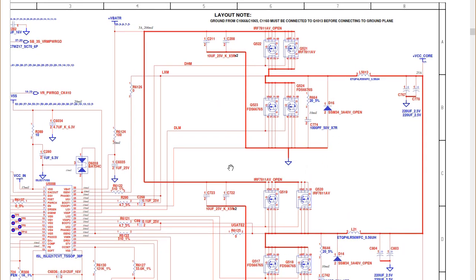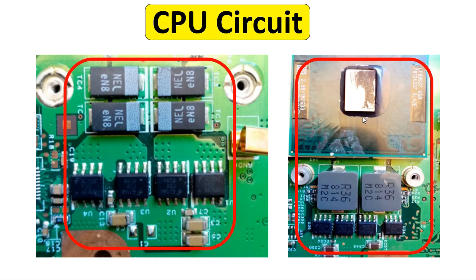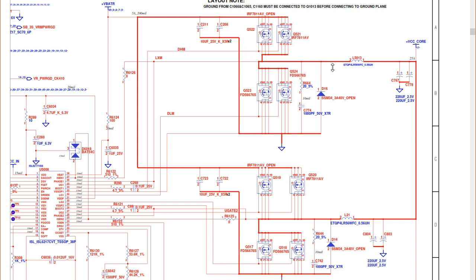Let's see these components on the motherboard. We have two ICs, the MOSFETs, inductors, and chemical capacitors. This is the CPU circuit — here is the first side, and this is the back of the motherboard. Next to the CPU we have two channels, exactly as we have seen in the schematic: the first channel with four MOSFETs, an inductor, and two chemical capacitors; and the second channel with four MOSFETs, two chemical capacitors, and an inductor.